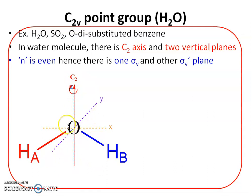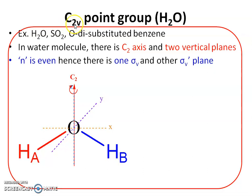In the water molecule there is one C2 axis, satisfying one condition of the C2V point group. The next condition is there must be two vertical planes — the '2V' refers to two vertical planes passing through the principal axis.